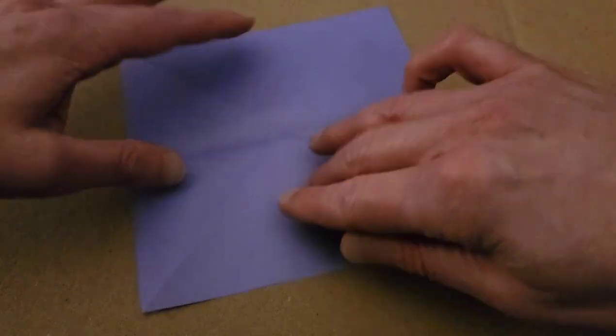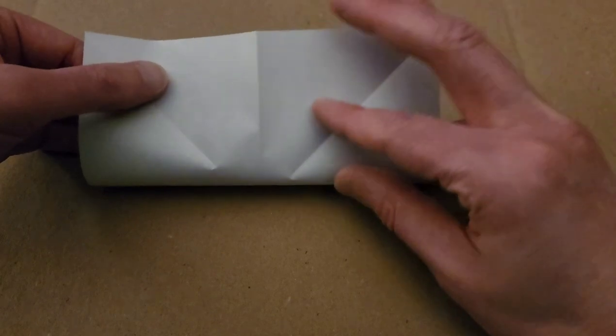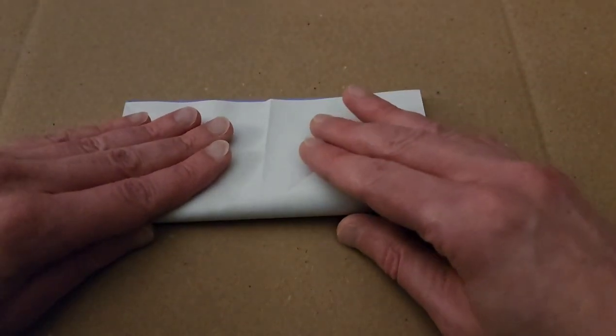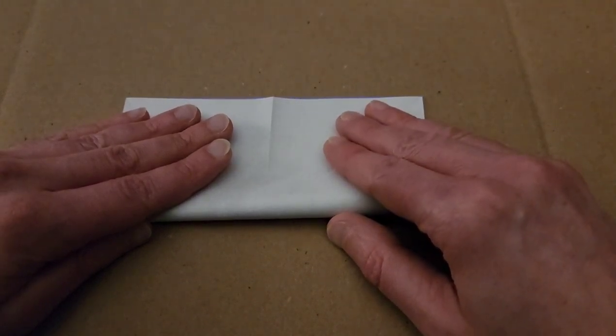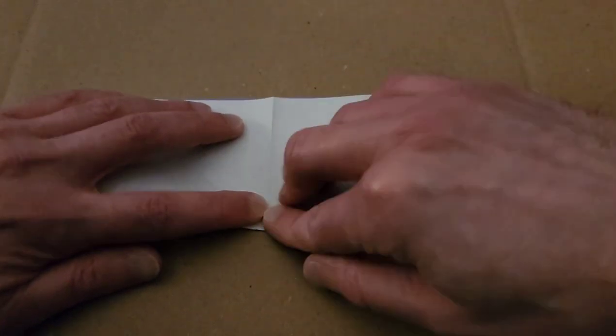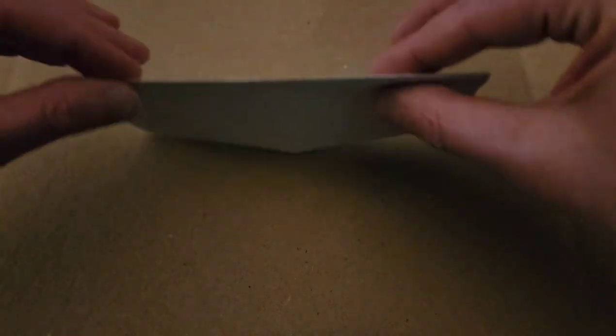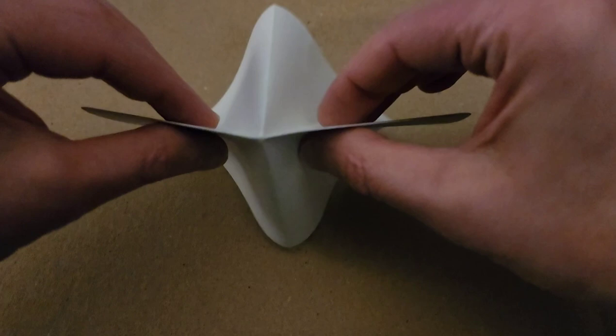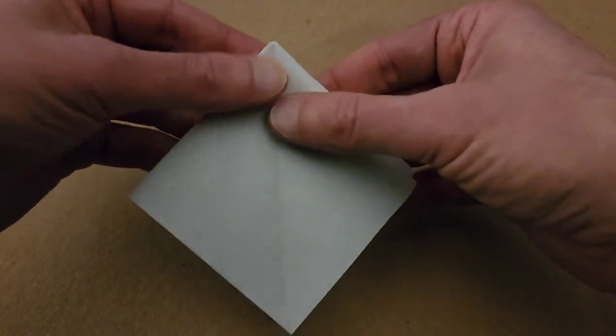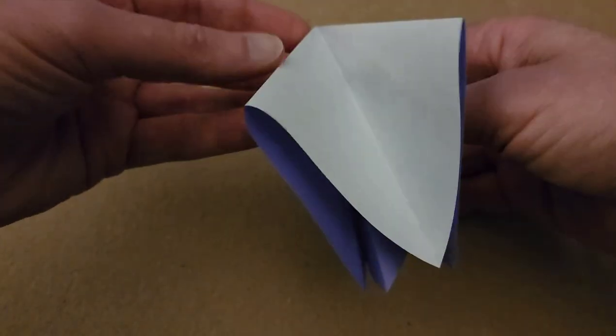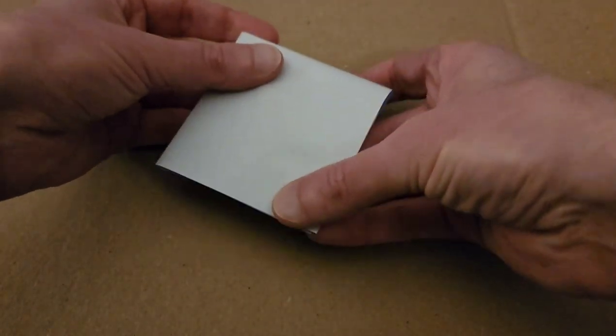And open, and turn, and then fold in half the other way. There we go, and then last step for the base. We're going to smush it like this, create sort of a star shape, and then smush flat. So you have two flaps on one side, and two on the other. And give it a nice flattening out.